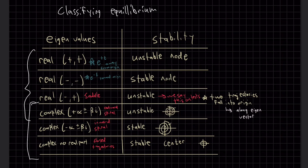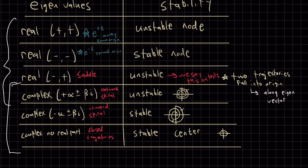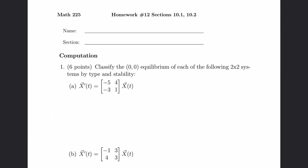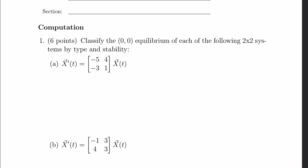Then we'll look at complex eigenvalues — with a real part and with no real part. If it has no real part there are pure oscillations and you get circular or oval type shapes. If it has a real part, it depends on whether it's positive or negative to determine if it's a stable spiral or an unstable spiral. So let's put this into action — this is homework 12 from our class.